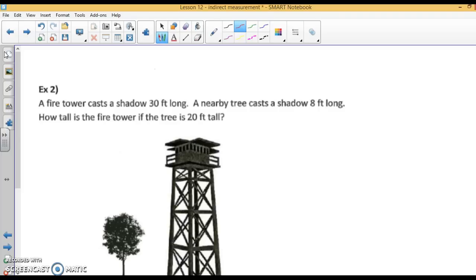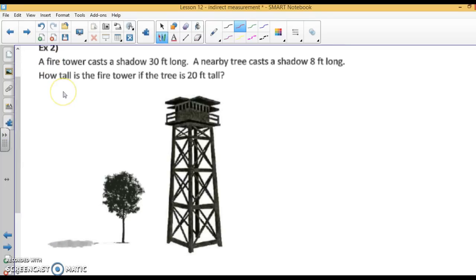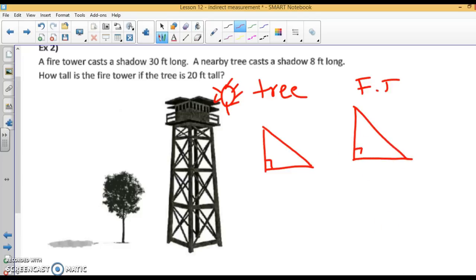A fire tower casts a shadow 30 feet long. A nearby tree casts a shadow 8 feet long. How tall is the fire tower if the tree is 20 feet tall? We've got a tree and a fire tower. Here's our tree and its shadow. Here's our fire tower and its shadow. The fire tower casts a shadow 30 feet long. Remember, shadow is on the ground. A nearby tree casts a shadow 8 feet long.